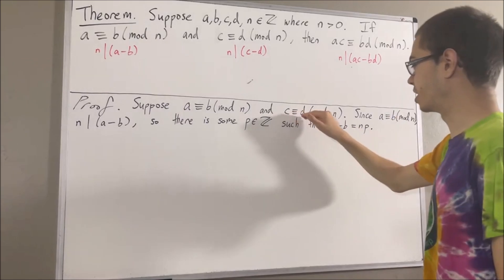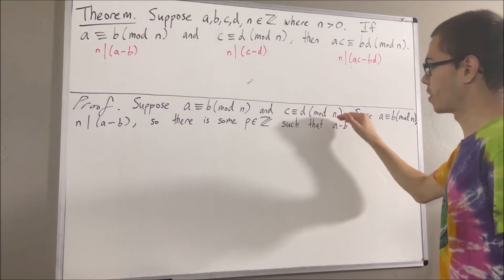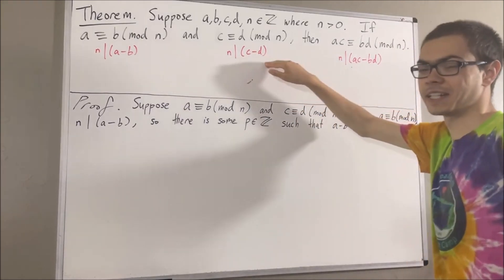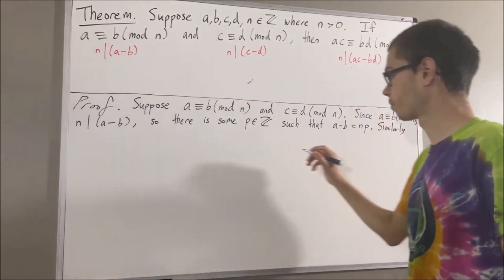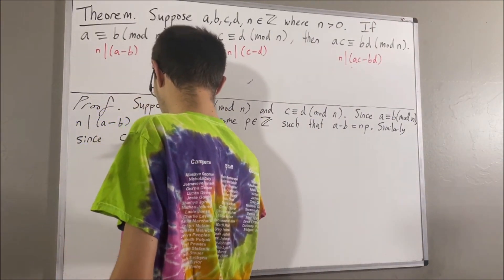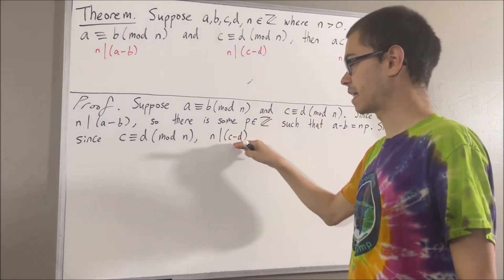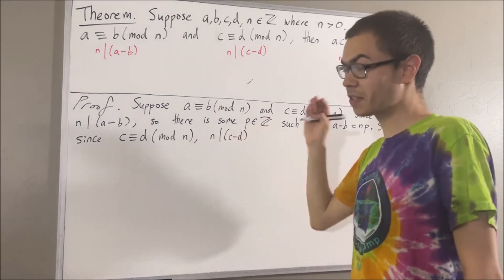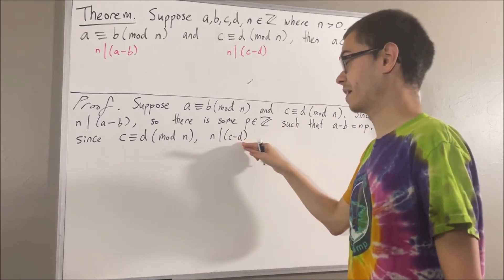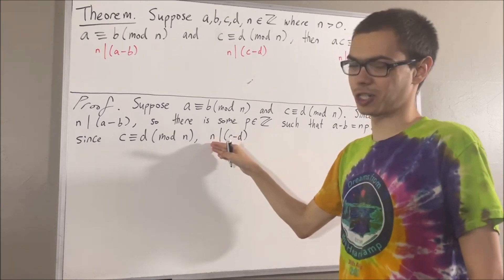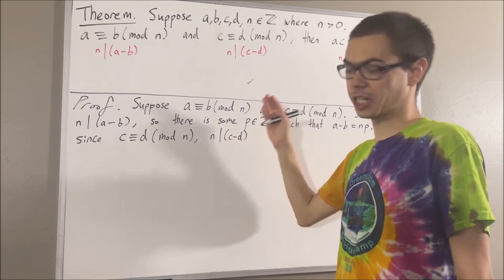We're also given that c is congruent to d modulo n, and we know that means n divides c minus d. And to say that n divides c minus d means there exists an integer such that c minus d is equal to n times that integer. I'll call the integer q.